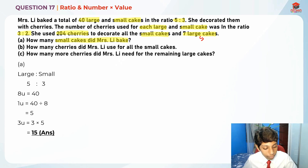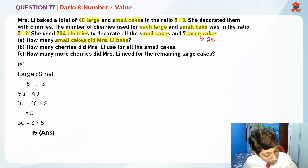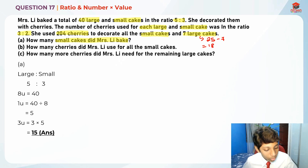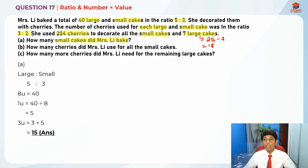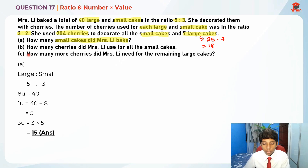So 40 minus 15 equals 25 large cakes. Then 25 minus 7 equals 18, so there's a remainder of 18 large cakes that were not decorated with the 204 cherries. For Part B, they're asking how many cherries did Mrs. Lee use for all the small cakes.